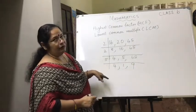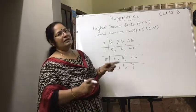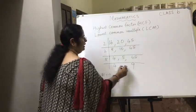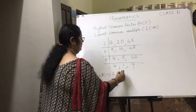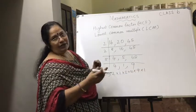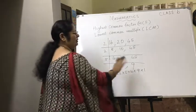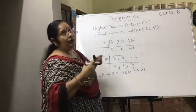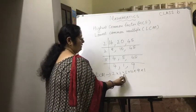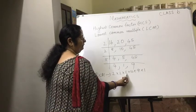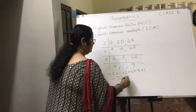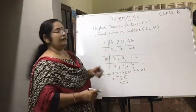Now we have 4, 1, and 9. None of these are divisible by the same number for at least 2 of them, so we stop here. The LCM is 2 × 2 × 5 × 4 × 1 × 9. Calculating: 2 × 2 = 4, 4 × 5 = 20, 20 × 4 = 80, 80 × 9 = 720. So the LCM of 16, 20, and 45 is 720.